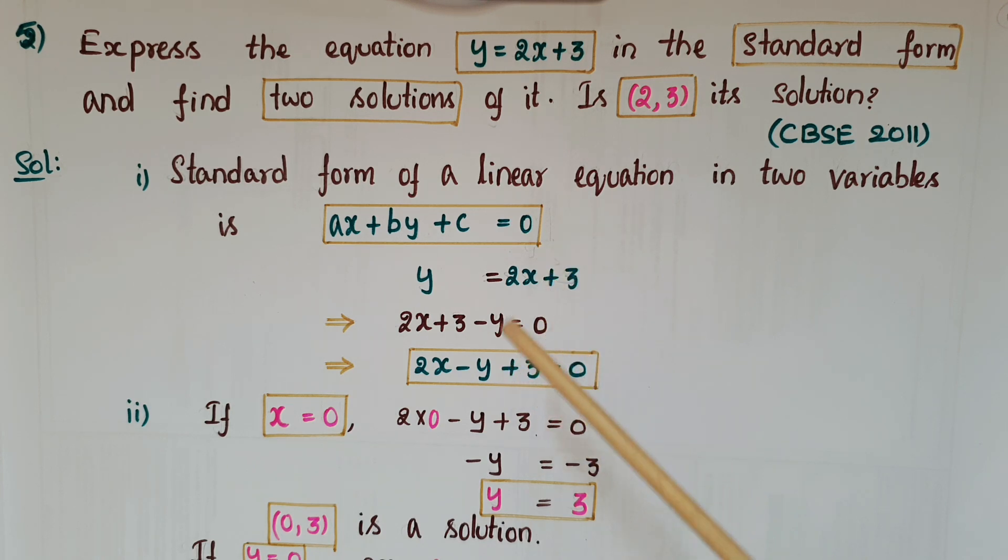Now we have to find two solutions of this equation. First, assume x equals 0, then 2 into 0 minus y plus 3 equals 0, then y equals 3. So (0,3) is a solution of this equation.